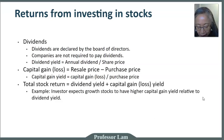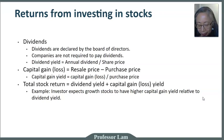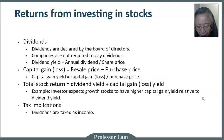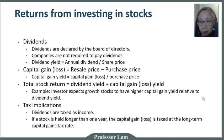The tax consequences are also important to consider alongside total return. A growth stock will have a higher capital gain component compared to an income stock, which has a higher dividend yield component. Dividends are taxed as income, whereas capital gains are typically taxed at a different rate. If you hold a stock for longer than a year, the capital gain is taxed at the long-term capital gains tax rate, which is typically lower. So even if your total return from a growth stock is the same as an income stock, the tax implication can be different.